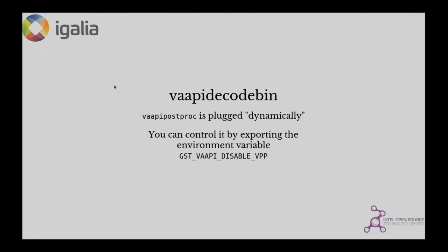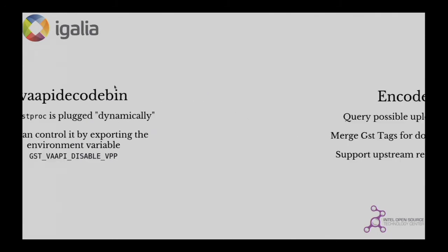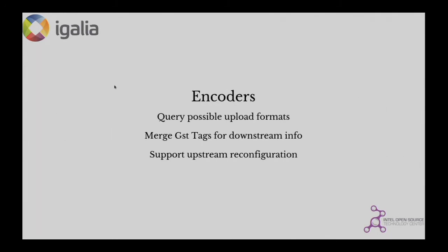In the case of the VPP codebin, we now plug the VPP post-proc dynamically, so we can control whether to use it or not via an environment variable. I know there are too many environment variables — that's not ideal, but it's an easy way to handle it. In the case of encoders, we now query the possible upload formats, so we don't rely on using VPP post-proc before the encoder. We expose in the caps what formats the encoder can handle, so there's no need to block VPP before the encoder. We also merge GStreamer tags from upstream and pass them downstream, and we support upstream reconfiguration if the stream changes.